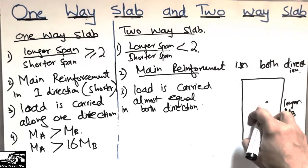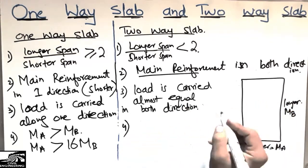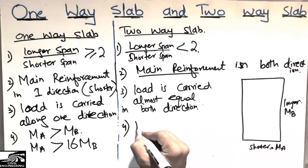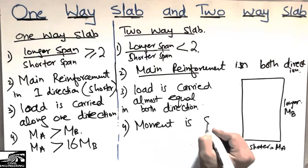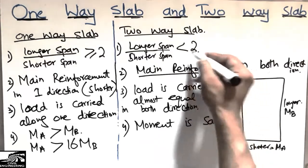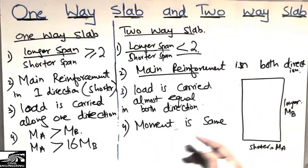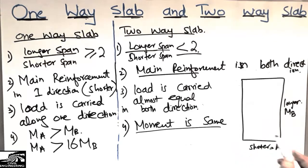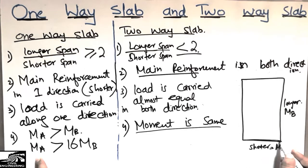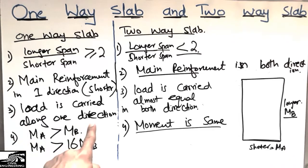It has been proven that Ma is greater than Mb by up to 16 times the moment coming in the longer direction. In the case of the two-way slab, the moment demand is almost equal in both directions. If it is a square slab, the moment is exactly the same in both the longer and shorter directions. This is why in a one-way slab the load is mostly carried along one direction and the main reinforcement is provided in one direction.